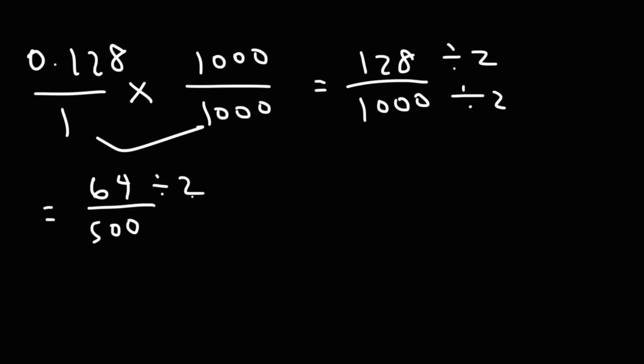Now, let's divide by 2 again. 64 divided by 2 is 32. 500 divided by 2 is 250. We can also divide by 2 again. Half of 32 is 16. Half of 250 is 125. At this point, we can't simplify it any further. 2 doesn't go into 125. So, this is going to be our answer. It's 16 over 125.